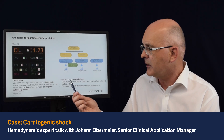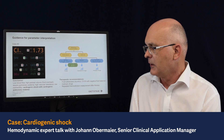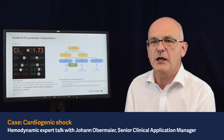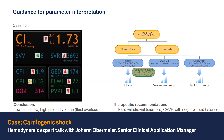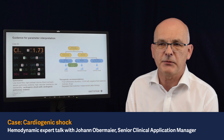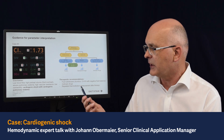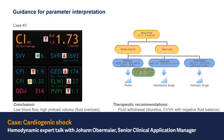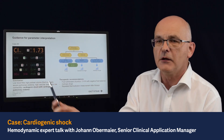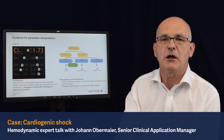Treatment options in this case are more clear. We should reduce the intravascular fluid status — applying fluid withdrawal either by giving diuretics or hemofiltration with negative fluid balance. Definitely, we also need to support the cardiac function by applying inotropic drugs to the patient. And as always, when we apply therapy, we must repeat the thermodilution measurements afterwards to get updates on all parameters, especially the global end-diastolic volume index and extravascular lung water index.